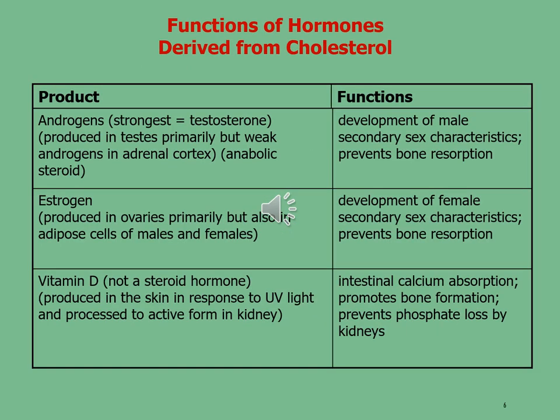Here we will discuss the functions of some important hormones derived from cholesterol. First, androgens — the strongest is testosterone, produced in the testes primarily, but weak androgens are produced in the adrenal cortex as anabolic steroids. They are used for the development of male secondary sex characteristics and prevent bone resorption. The second hormone is estrogen, produced in the ovaries primarily but also in the adipose cells of males and females. It is used for the development of female secondary sex characteristics and also to prevent bone resorption.